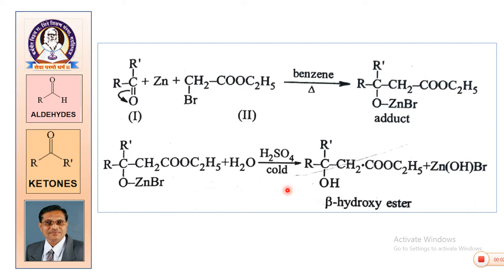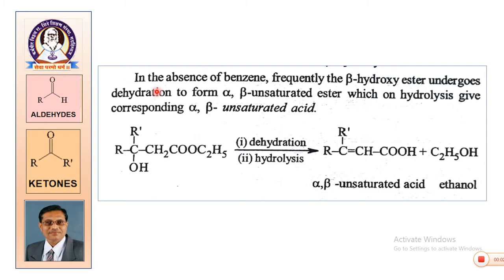The hydrolysis is carried out in the presence of cold sulfuric acid. In the absence of benzene — that is, without an inert solvent — the beta-hydroxy ester frequently undergoes dehydration to form an alpha-beta unsaturated ester, which on hydrolysis gives the corresponding alpha-beta unsaturated acid.